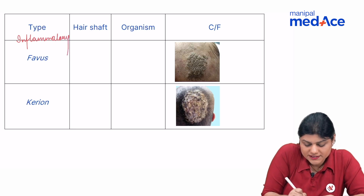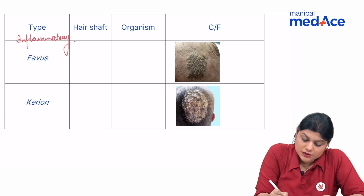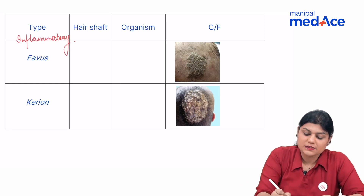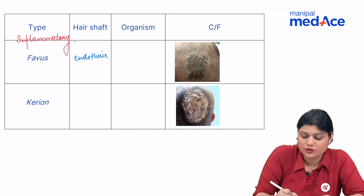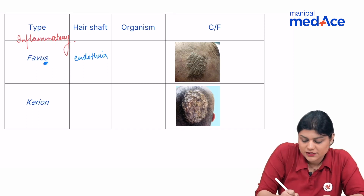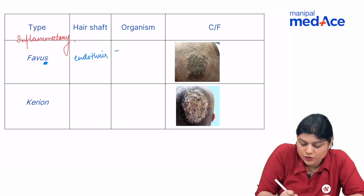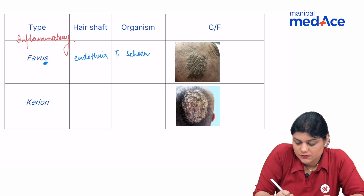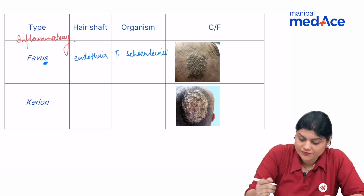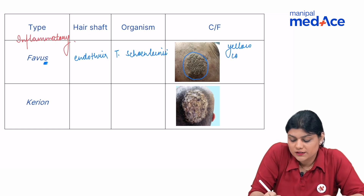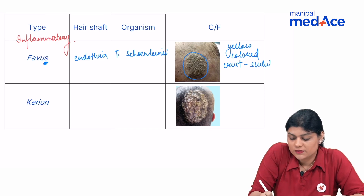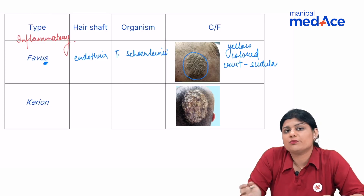Next we have the inflammatory type of tinea capitis, which includes favours and kerion. In favours, the spores are endothrix — present inside the hair shaft. Remember favours from S: it is caused by Trichophyton schoenleinii. The clinical features are yellow-coloured crusts known as scutula. Since the spores are inside the hair shaft, there is formation of air spaces inside the hair.